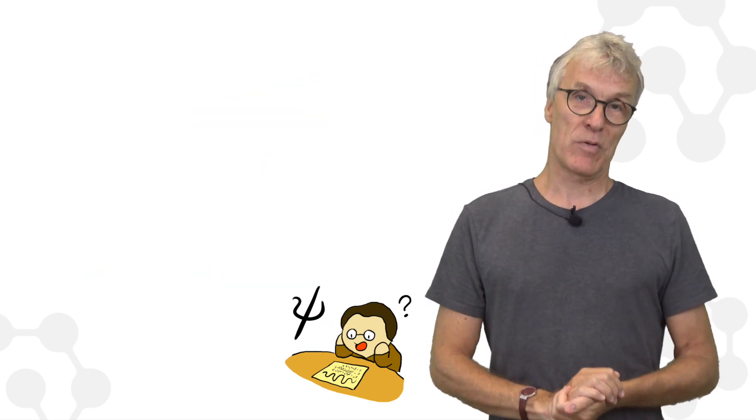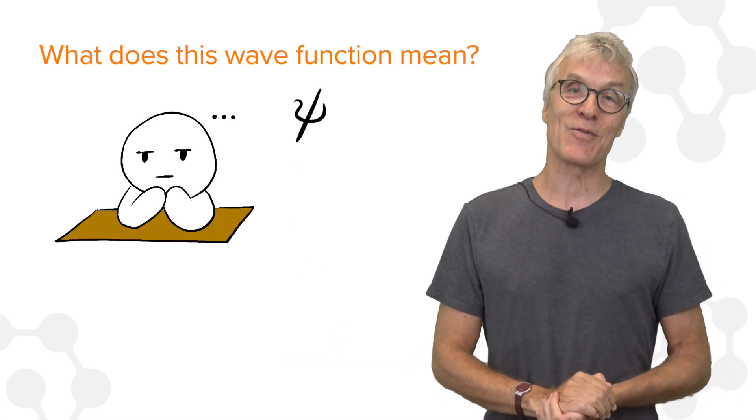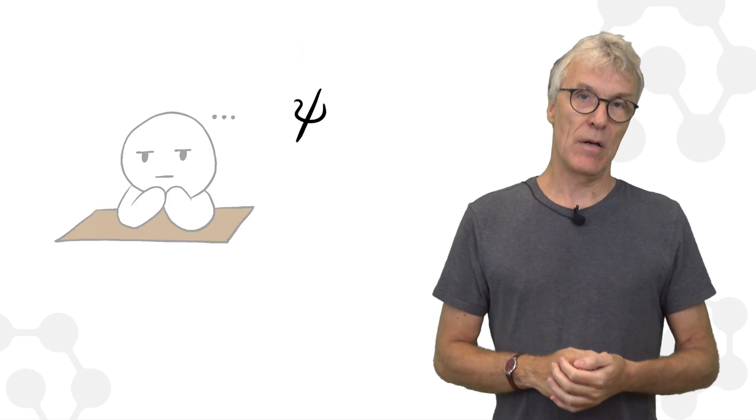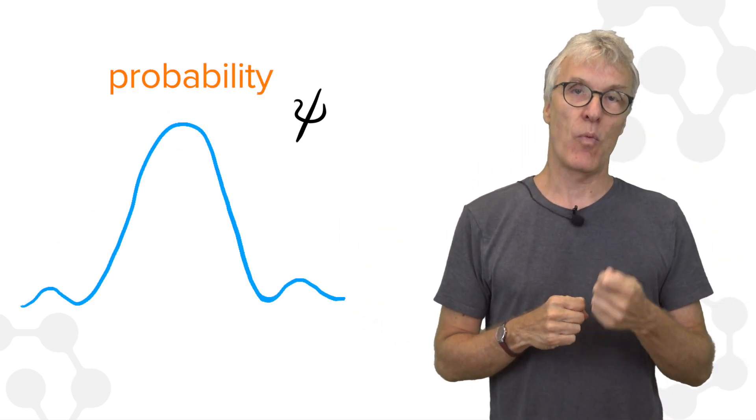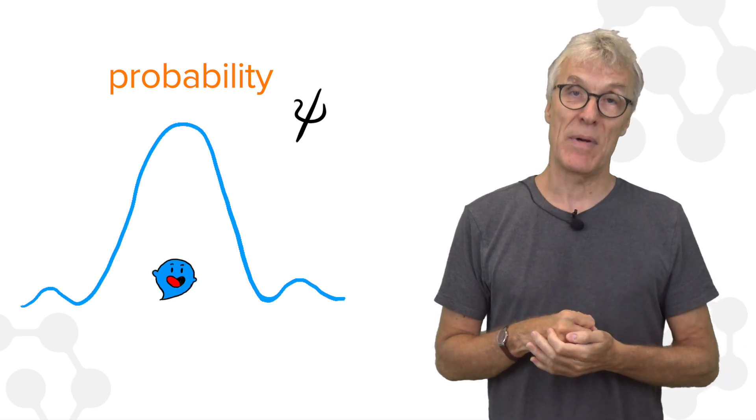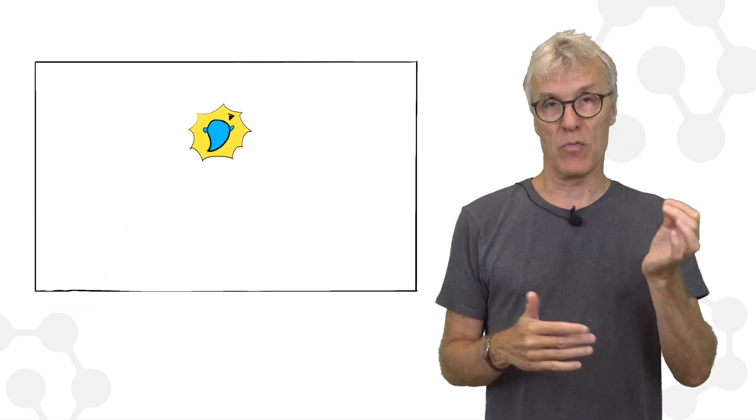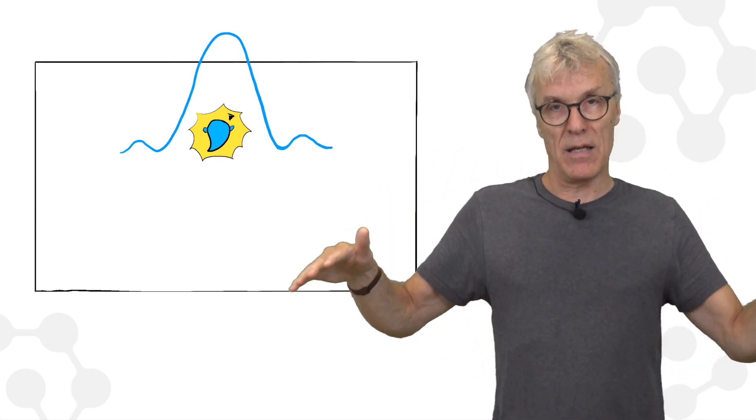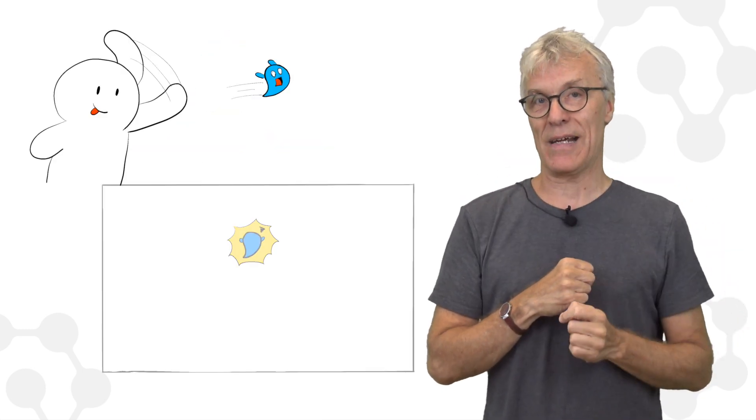But Schrödinger's wave function does not describe a physical distance. It does not describe a sound pressure level. It doesn't describe anything physical. Still, the theory works remarkably. We had to learn, or my colleagues from the 1920s had to learn, what this wave function means. And one thing that was quickly learned was that the shape of this wave is actually telling the probability for where to see particles if you do a measurement.